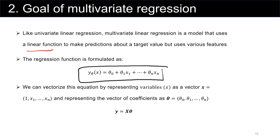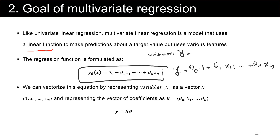The regression function is formulated as y equals theta sub zero multiplied by one, plus theta sub one multiplied by x sub one, plus theta sub n multiplied by x sub n. Comparing to univariate, in univariate we have y equals theta sub zero plus theta sub one times x sub one. But now we have multiple features — various inputs.